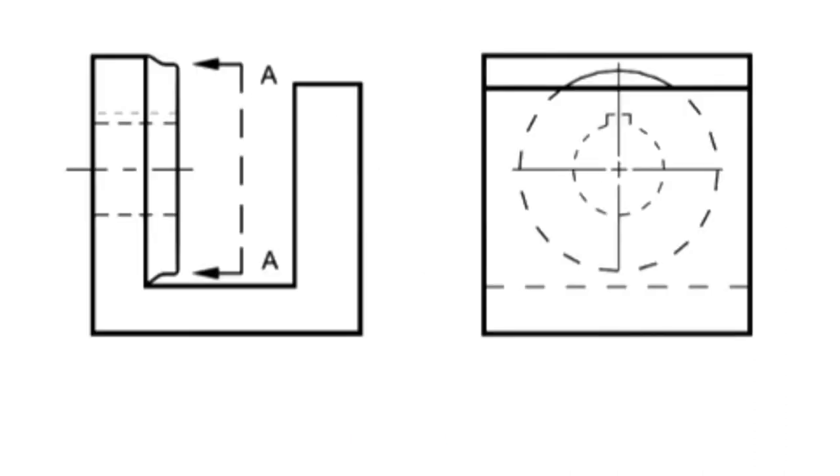A viewing plane line is a line that indicates a special type of detail view. A viewing plane line is very similar to a cutting plane line, but it does not actually cut the part or generate a section.